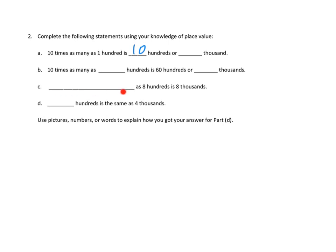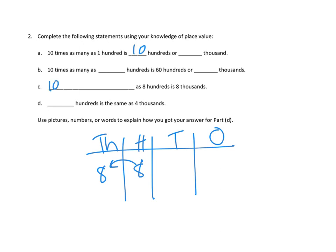Let's take a look at C. The blank as eight hundreds is eight thousands. So what would it take us to get from eight hundreds over to eight thousands? I'm going to do a quick version of our place value chart. We have ones, tens, hundreds, thousands. Let's see. How would we get from having eight in the hundreds column to having eight in the thousands column? What would we have to do? Oh, I think that would be 10 times as many. 10 times as many as eight hundreds is eight thousands.